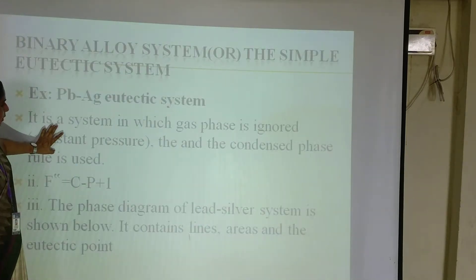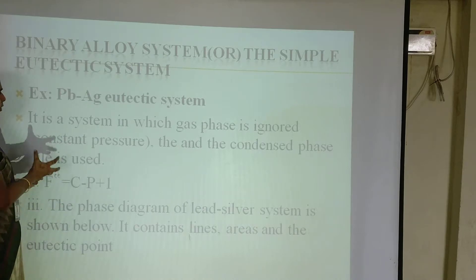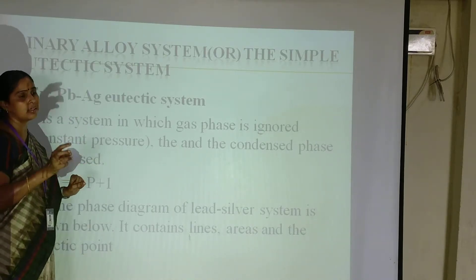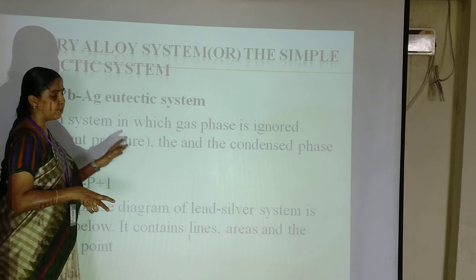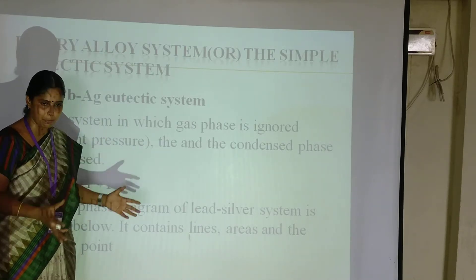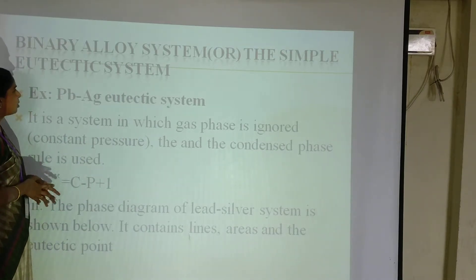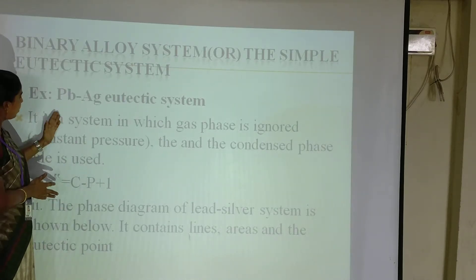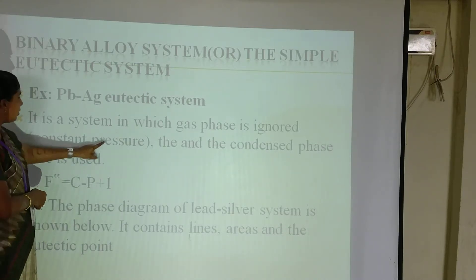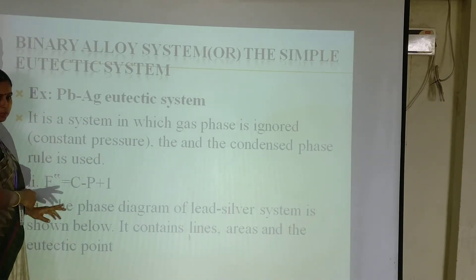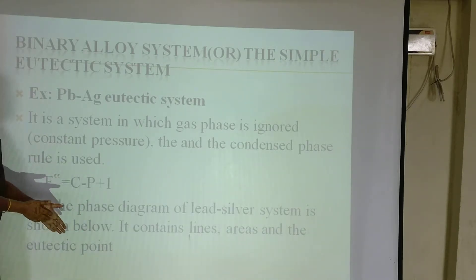Now we are going to explain this using the lead-silver eutectic system. In this eutectic system, the meaning of eutectic is that at a certain point we have two solids present in the liquid state simultaneously. At this eutectic point the two solids are present and it is possible to separate them individually. We are going to apply the formula F' = C − P + 1.